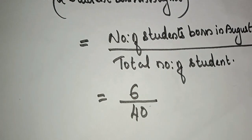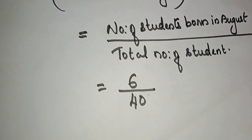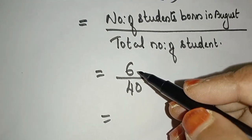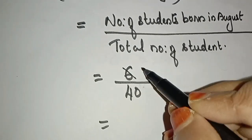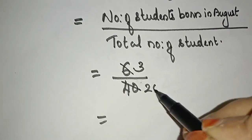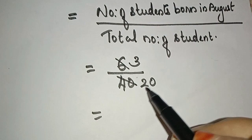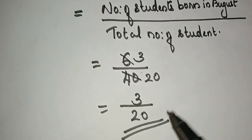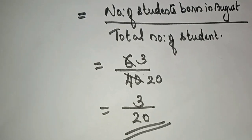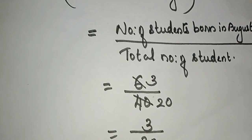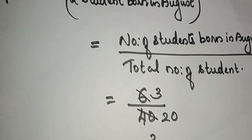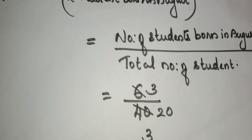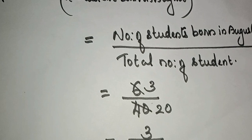The number of students born in August is 6. Now we reduce: 6 divided by 40. 2 twos are 4, giving us 3 by 20. So the probability of a student born in August is 3 by 20. Clear?